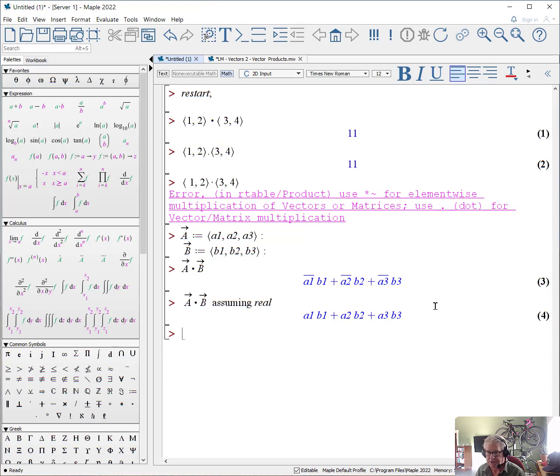Finally, you can also do this calculation with the actual procedure, writing out the actual procedure. It's stored in the linear algebra package. So if you say linear algebra colon dash dot product, open parentheses a, comma b, and again we'll do it assuming real, it will do exactly the same calculation.